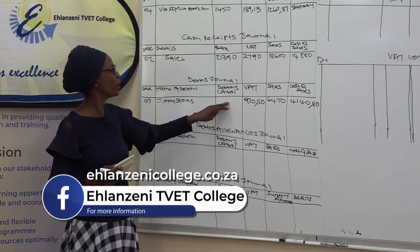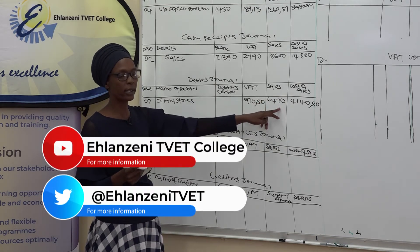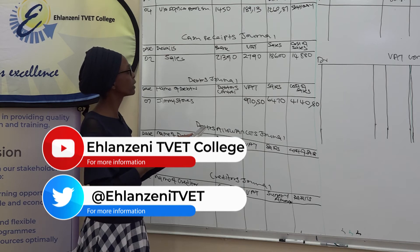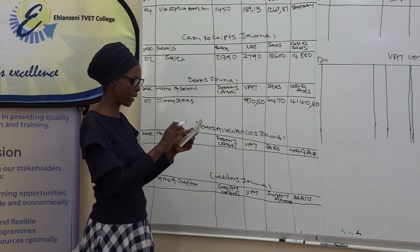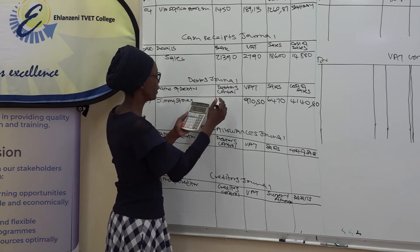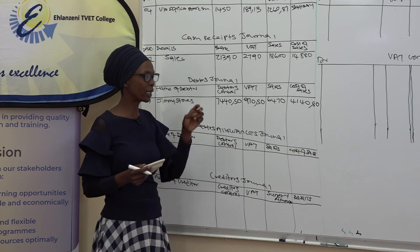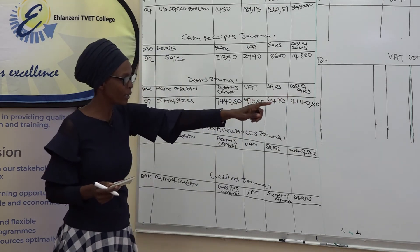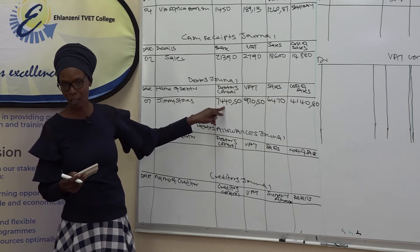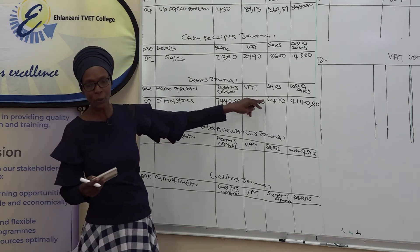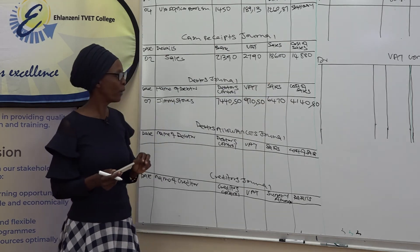We then enter the total inclusive amount to the debtors control column by adding the VAT and the sales: 6,470 plus 970.50 equals R7,440.50. If the transaction had said 6,470 was inclusive, we would start under the debtors control column, calculate the VAT using the inclusive formula, and then subtract VAT from debtors control to get the sales column figure.